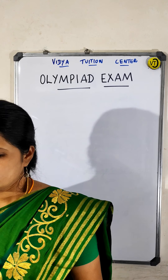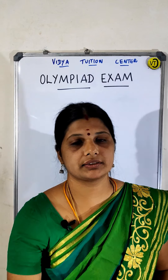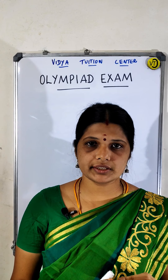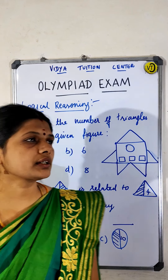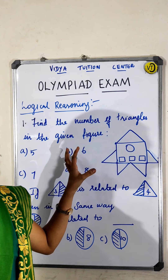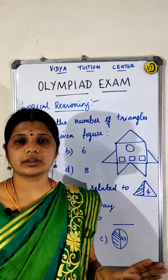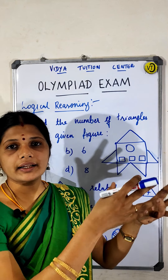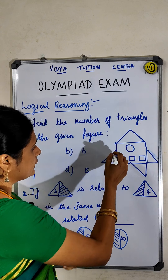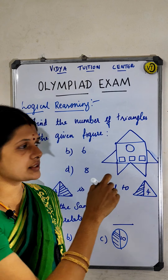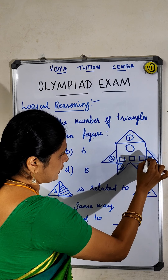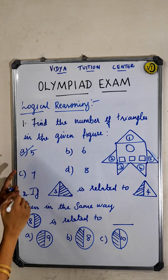Now let's look at logical reasoning — what type of problems you will encounter. In logical reasoning, you have to think logically and write the answer; it is not straightforward addition or subtraction. For example: 'Find the number of triangles in the given figure.' In that figure you identify the triangles — first, second, third, fourth, fifth — so there are five triangles, making option A correct.